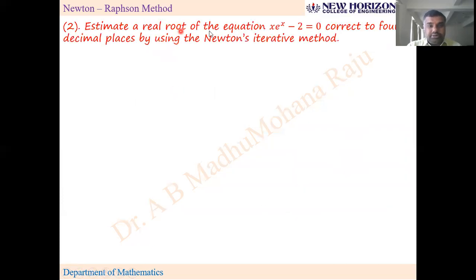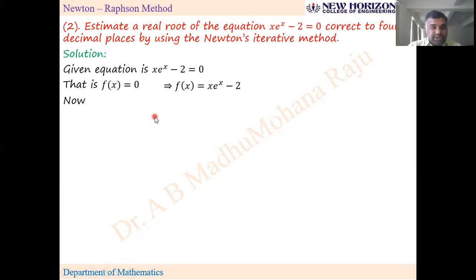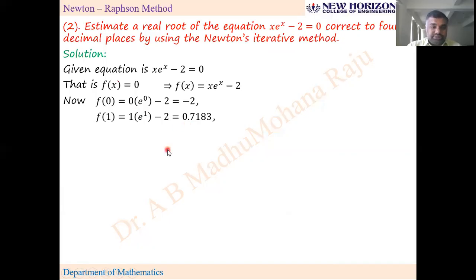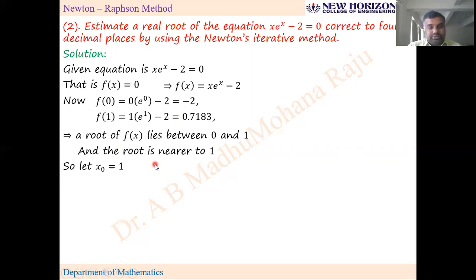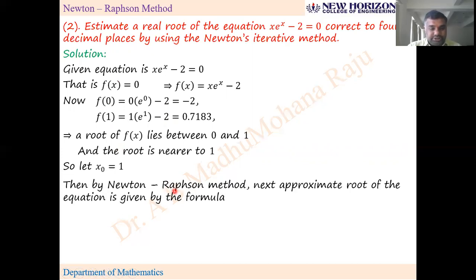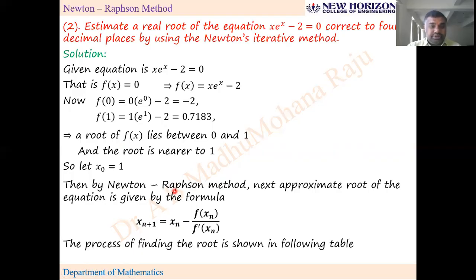Next problem: estimate a real root of the equation x·eˣ - 2 = 0, correct to four decimal places, using Newton's iterative method. List f(x) and guess two values by trial and error. At x=0, f = -2; at x=1, f is positive. So the root lies between 0 and 1, but nearer to 1. Take x₀ = 1, then proceed with Newton-Raphson method.